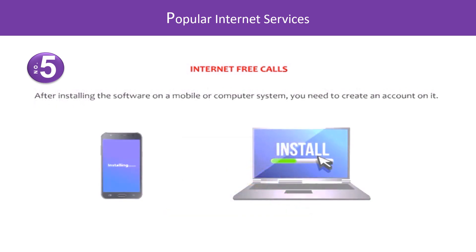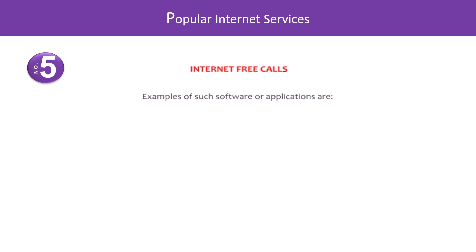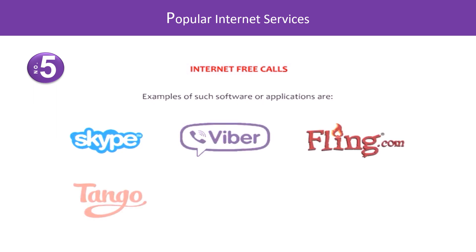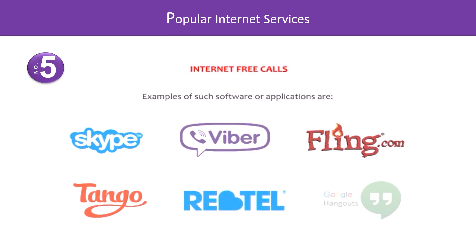After installing the software on a mobile or computer system, you need to create an account on it. Examples of such software or applications are Skype, Viber, Fring.com, Tango, Rebtel, and Google Hangouts.